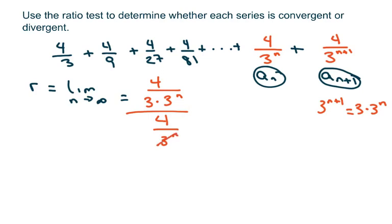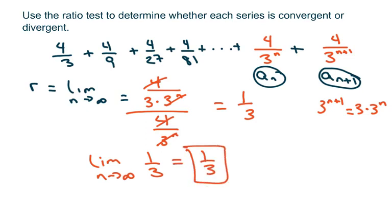Now, what's going to happen is these two cancel and the fours cancel. So we get this equals 1/3. The limit as n approaches infinity of a constant is the constant. Since that's my r now and absolute value of r is less than 1, that means it's convergent.